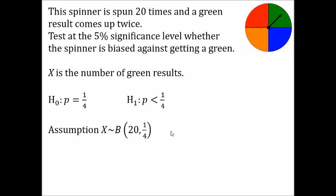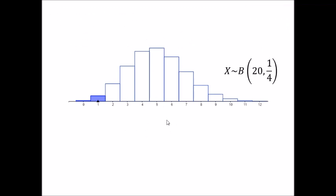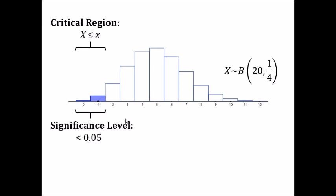Those are always the first three steps. Going back to the graph we looked at before, the critical region is going to be a set of values of x. For this one, our critical region would be very small values of x, because we're looking to show that getting a green is very unlikely — very few greens. The significance level of 5% tells us that the probabilities of all values in our critical region have to add up to less than 0.05. So we want the probability that x is less than or equal to some value to be less than 0.05.